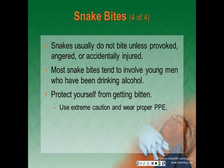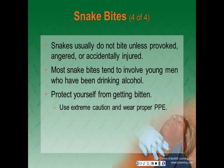Snakes usually do not bite unless provoked, angered, or accidentally injured — except for cottonmouths, which are often aggressive. Most snake bites occur between April and October and tend to involve young men who have been drinking. Only one-third of snake bites result in significant local or systemic injuries, and often envenomation does not occur because the snake recently struck another animal and exhausted its supply of venom. With the exception of the coral snake, poisonous snakes native to the United States have hollow fangs in the roof of the mouth that inject poison from two sacks at the back of the head. The classic appearance of a poisonous snake bite is two small puncture wounds about 0.5 inches apart with discoloration, swelling, and pain. Fang marks are a clear indication of a poisonous snake bite.